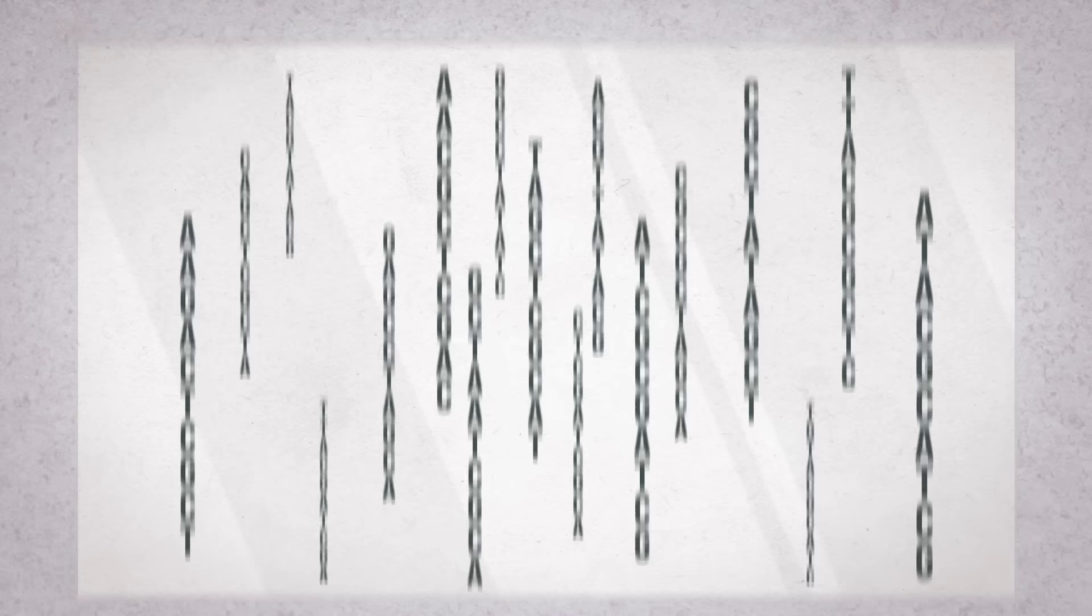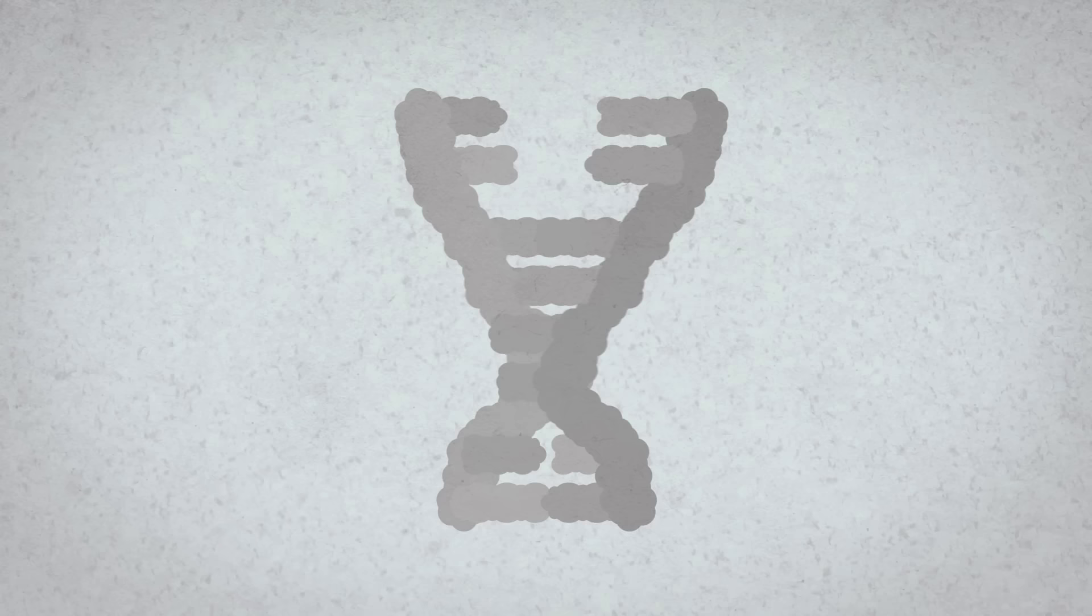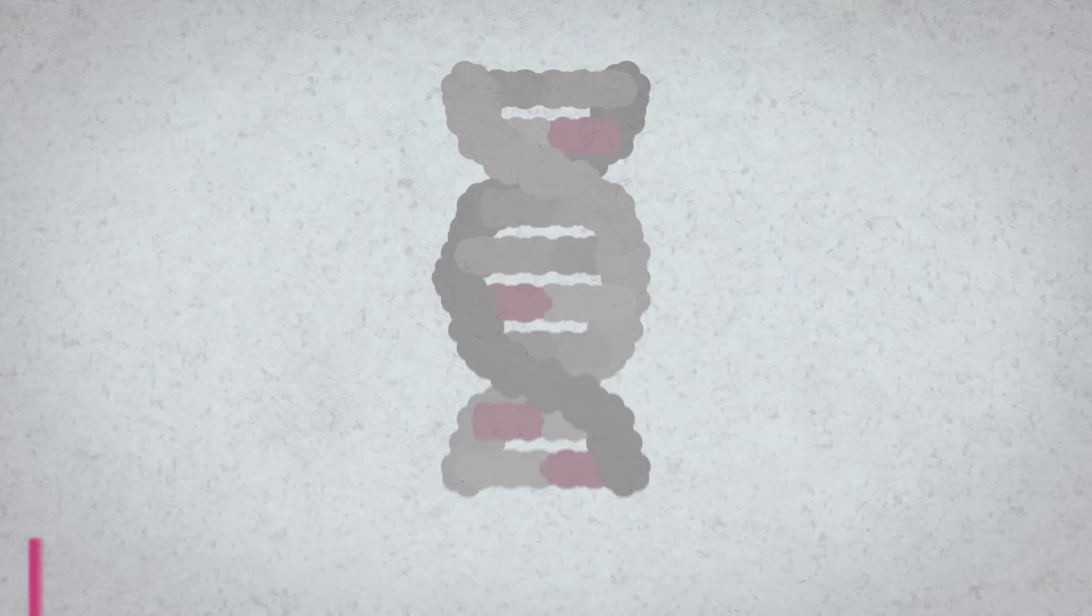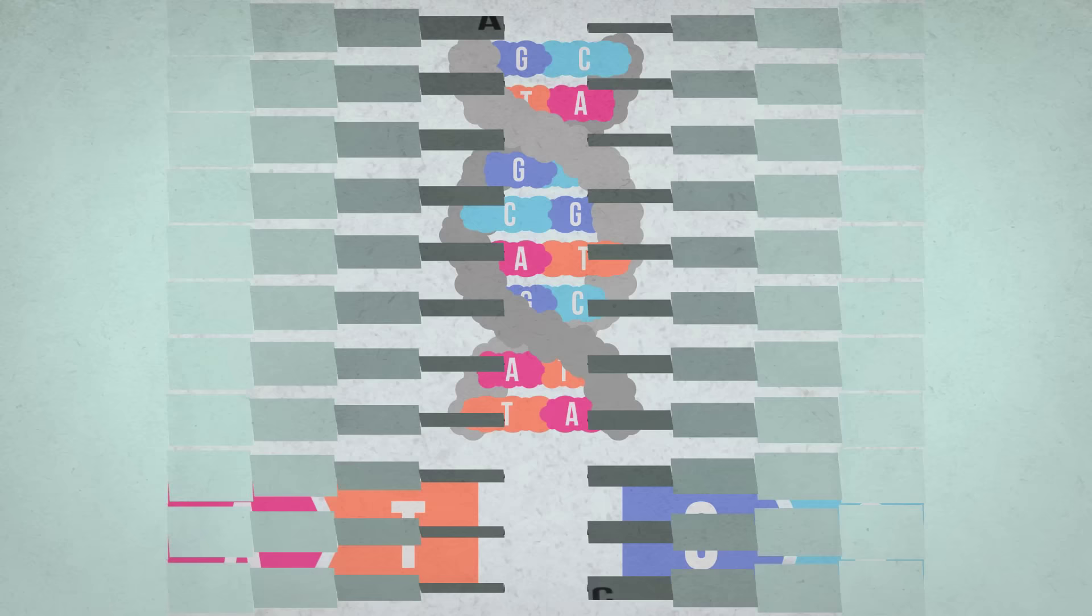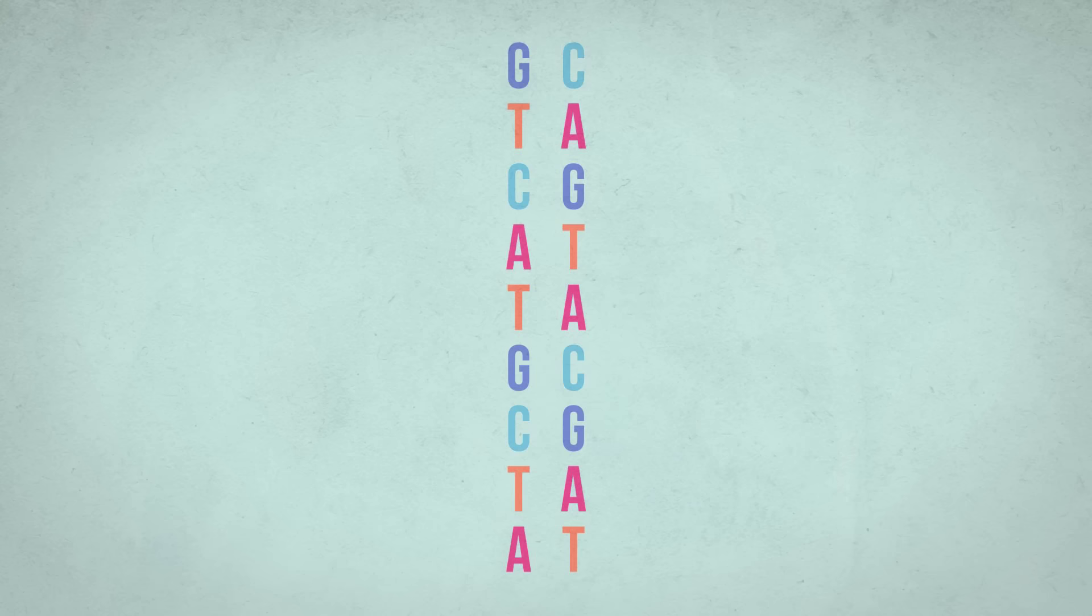Each of these pieces is then separated in space and sequenced individually. But how? It's helpful to remember that DNA binds to other DNA if the sequences are the exact opposite of each other. A's bind to T's, and T's bind to A's. G's bind to C's, and C's to G's. If the A-T-G-C sequence of two pieces of DNA are exact opposites, they stick together.